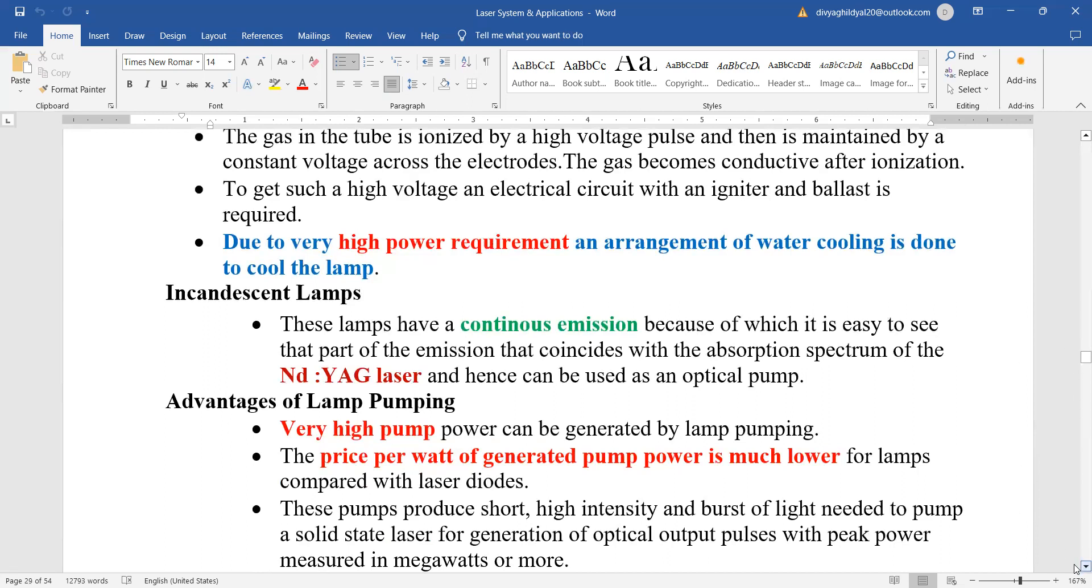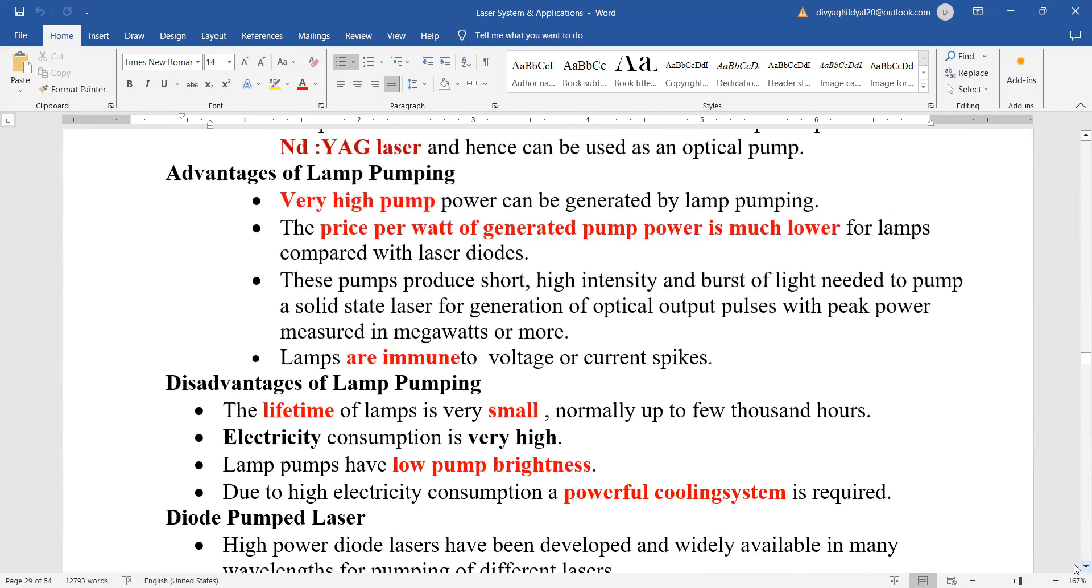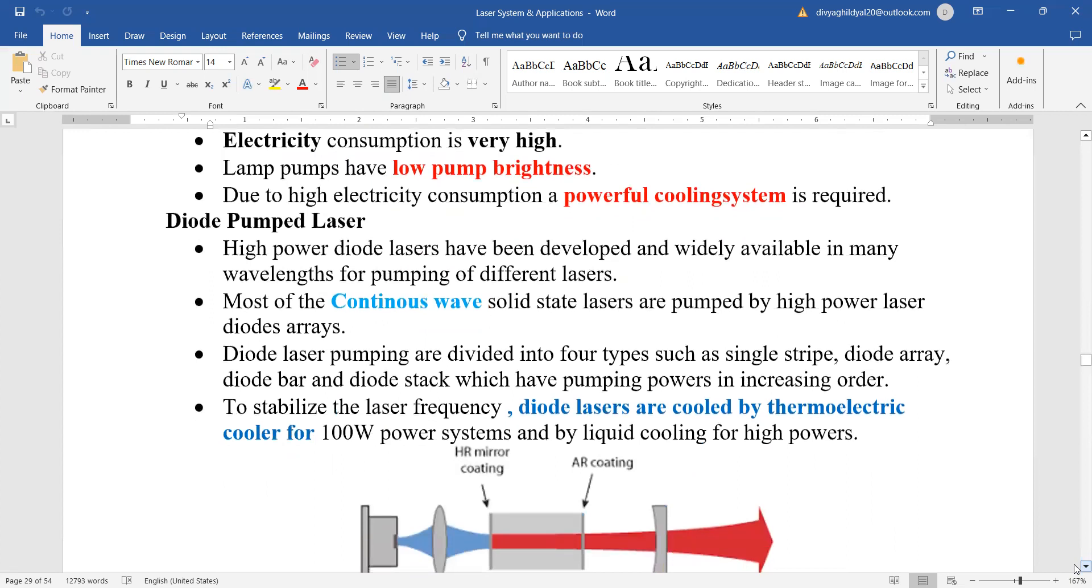What are the advantages of optical pumping or the lamp pumping? Very high pump power is generated. Price per watt of generated pump power is very lower. These lamps are immune to voltage fluctuations. The disadvantage is that their lifetime is very small. Electricity consumption is very high and lamp pumps have low lamp pump brightness. Now, in replacing this and obviously, they always require a cooling system. If you remember, this was one drawback of ruby laser also that it required a cooling system.